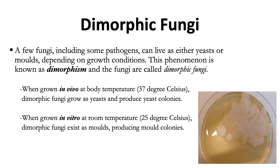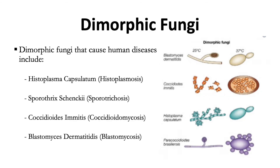A few fungi, including some human pathogens, can live either as yeast or as molds depending on growth conditions — a phenomenon called dimorphism. When growing in the body, or in vivo at 37°C, dimorphic fungi exist as unicellular yeast. When growing in the environment, or in vitro at room temperature of 25°C, they exist as molds producing mold colonies or mycelia. Dimorphic fungi that cause diseases in humans include Histoplasma capsulatum (histoplasmosis), Sporothrix schenckii (sporotrichosis), and those causing coccidioidomycosis and blastomycosis.